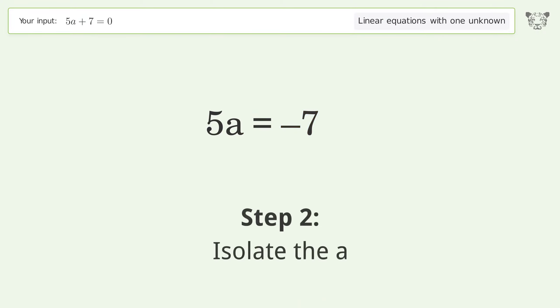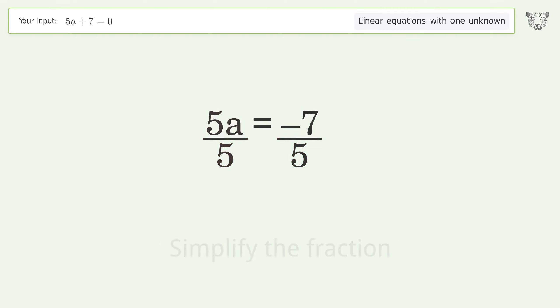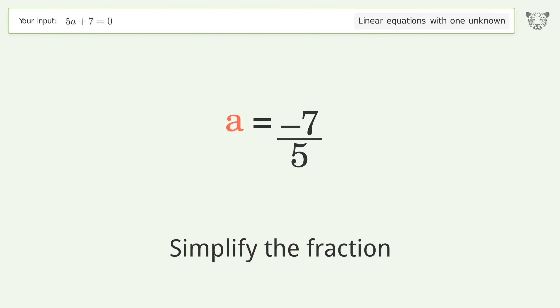Isolate the A. Divide both sides by 5. Simplify the fraction. And so the final result is A equals negative 7 over 5.